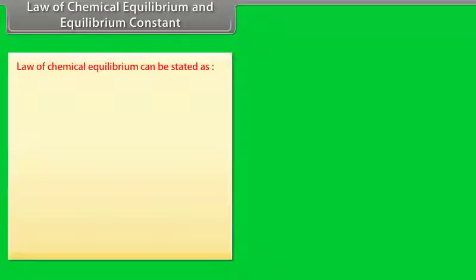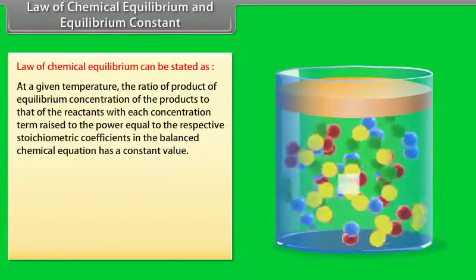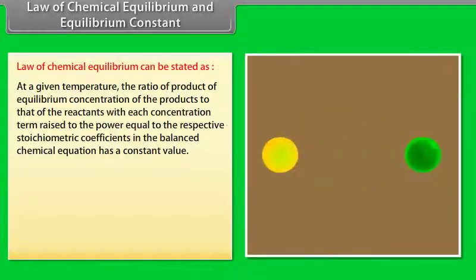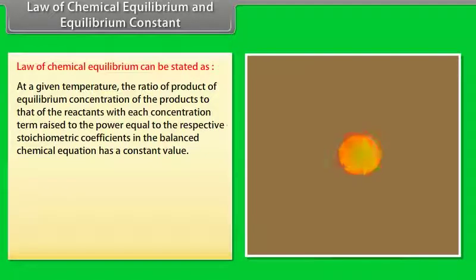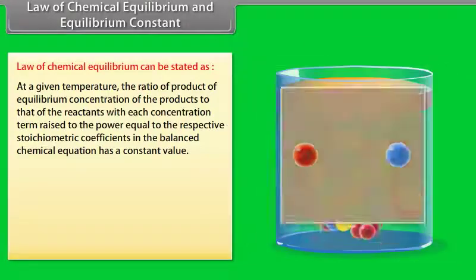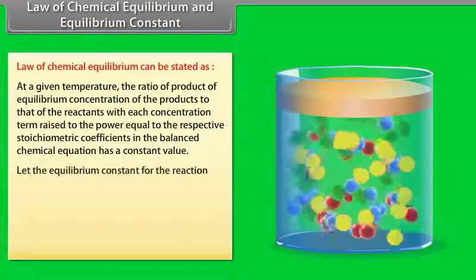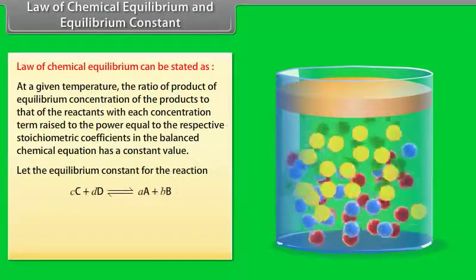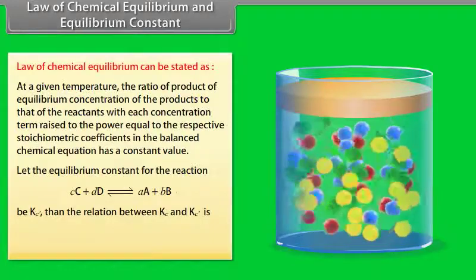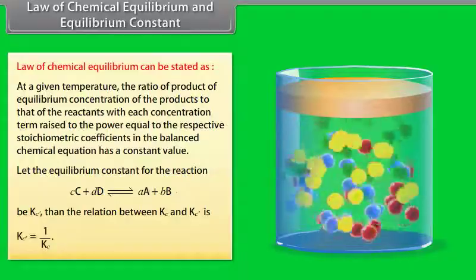The law of chemical equilibrium states that at a given temperature, the ratio of the product of equilibrium concentrations of the products to that of the reactants, with each concentration term raised to the power equal to its stoichiometric coefficient in the balanced chemical equation, has a constant value. If the equilibrium constant for the forward reaction is KC, then the equilibrium constant for the reverse reaction KC' is equal to 1/KC.